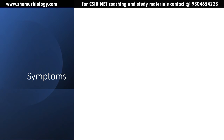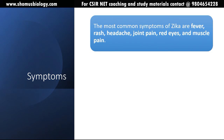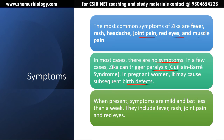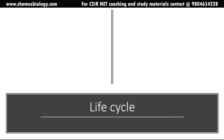The most common symptoms are fever, rash, headache, joint pain, red eyes, and muscle pain. In most cases there will be no symptoms. In a few cases Zika can trigger paralysis. In pregnant women it may cause birth defects, notably microcephaly, as already discussed. When symptoms are present they are mild and last less than a week. These symptoms can be confused with other viral diseases, making it difficult to identify initially, but serious cases can lead to paralysis or birth defects.